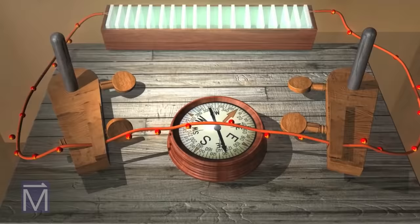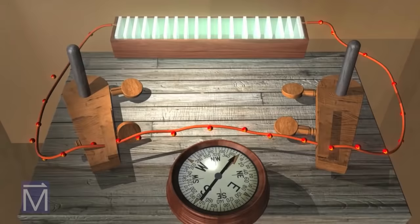If you move the compass to a new spot near the wire, the needle will realign with the direction of the magnetic field in that particular location.